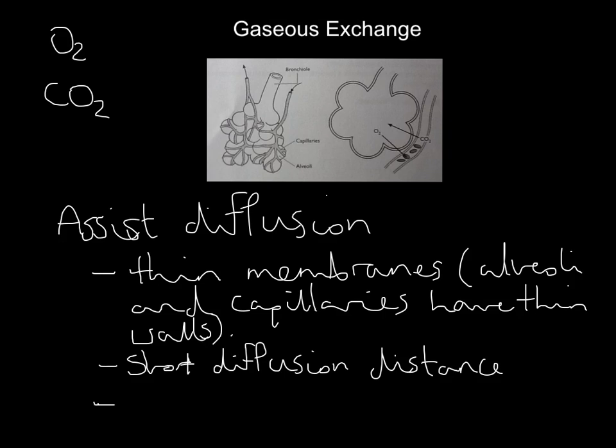The third main factor is a large surface area. There are millions of alveoli in your lungs — you've probably heard that if you spread your lungs out to one alveolus thick, you'd cover half a tennis court. Either way, it's a big surface area, meaning millions of alveoli provide lots of places for diffusion to take place.